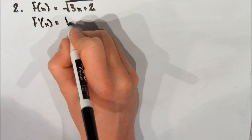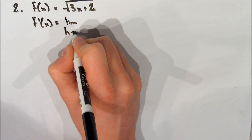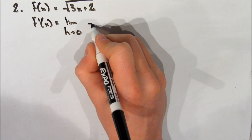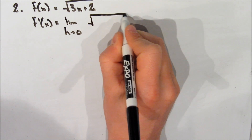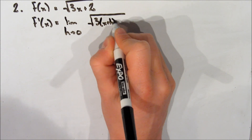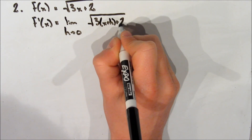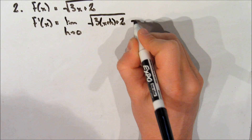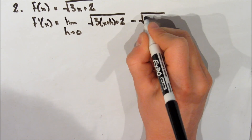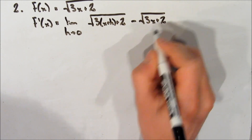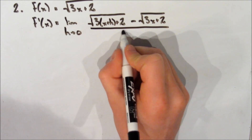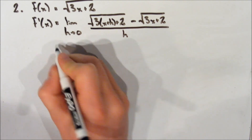Our second function is f of x equals the square root of 3x plus 2. We find the derivative: f prime of x equals the limit as h approaches 0 of f of x plus h — substituting x plus h everywhere we see x — minus f of x, all over h.